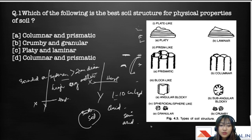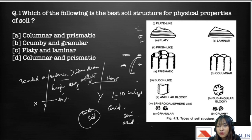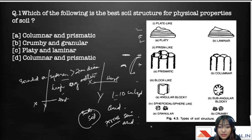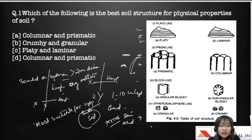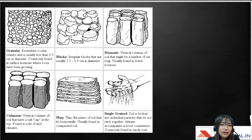In spheroid structures, infiltration, percolation, and water-holding capacity are not really affected by the wetting of the soil. The main difference between granular and crumby is that granular is less porous than crumby. Both granular and crumby are the most suitable for crop production. So the answer to which is the best soil structure for physical properties of the soil is crumby and granular.